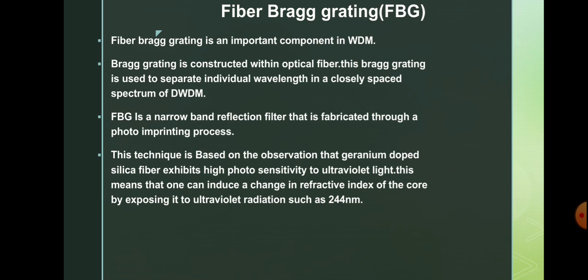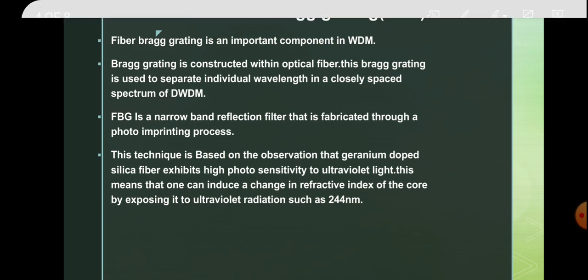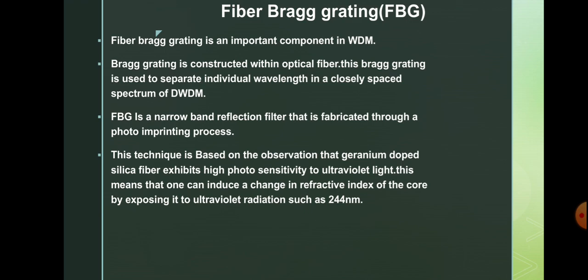Fibre Bragg grating is a narrow band reflection filter fabricated through a photoimprinting process. This photoimprinting process is based on the observation that germanium-doped silica fibres exhibit high photosensitivity to ultraviolet light. Once ultraviolet light is passed through a germanium-doped silica core, it induces different regions of refractive index inside the core. This means one can induce a change in the refractive index of the core by exposing it to ultraviolet radiation of wavelength 244 nanometers.